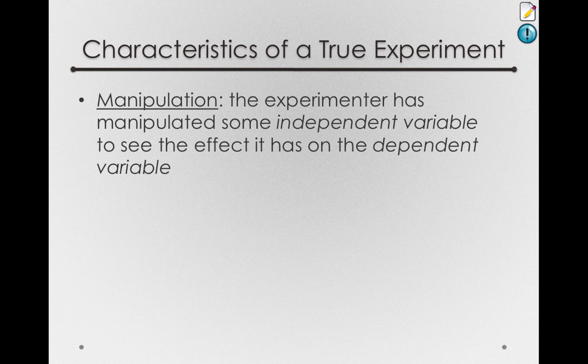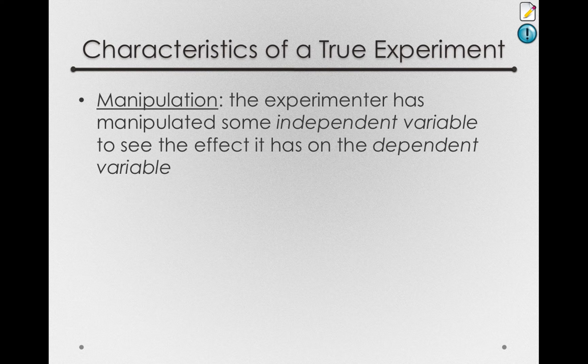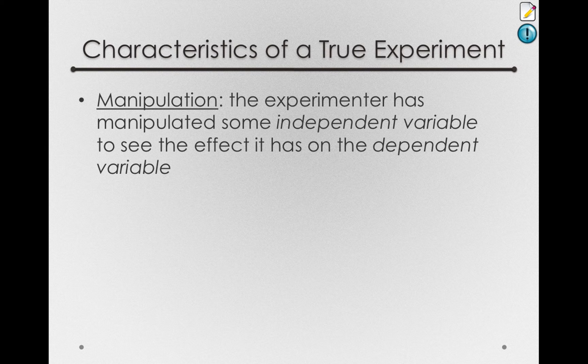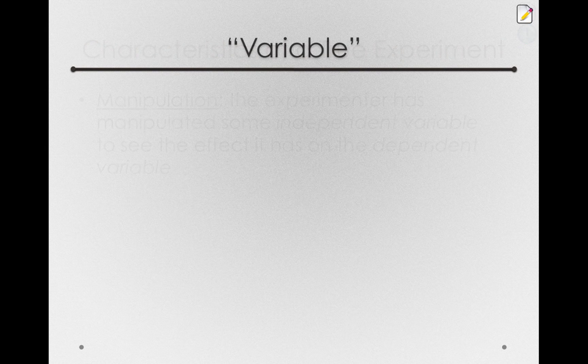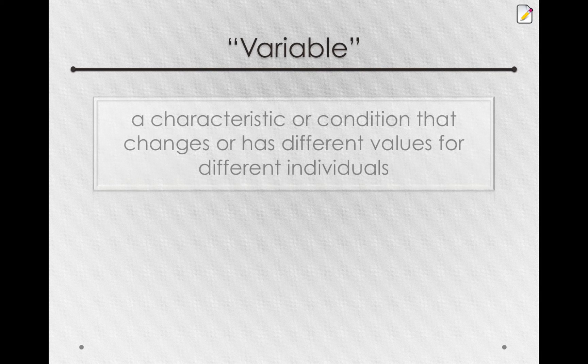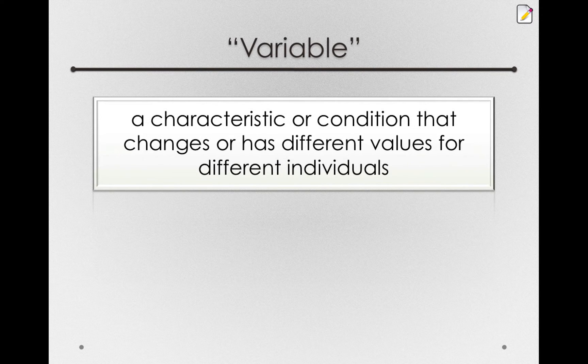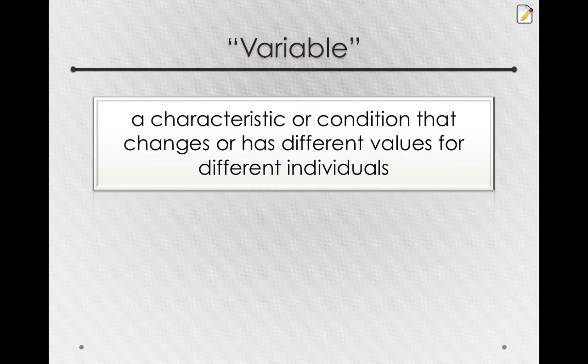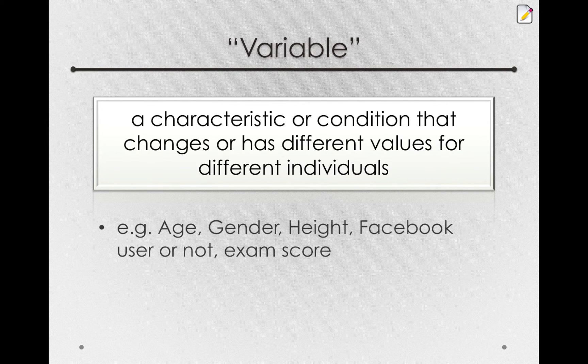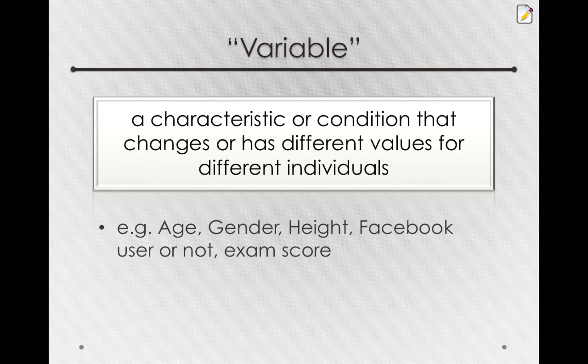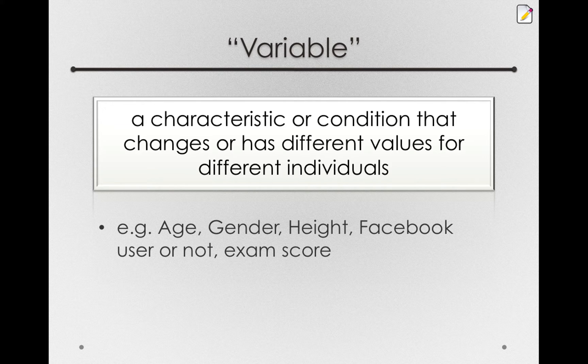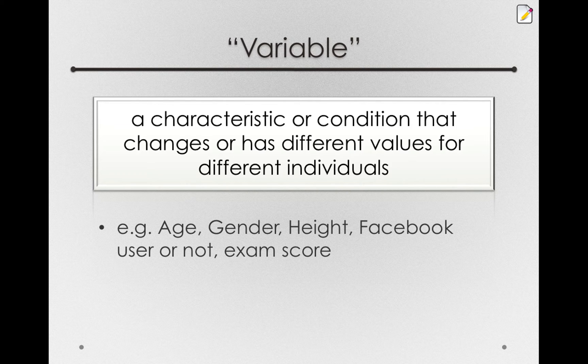There's a couple new words in there, so we want to take a sidestep here and talk about what we mean by variable, independent variable, and dependent variable. First, a variable is any characteristic or condition that changes or has different values for different individuals. This could be many different types of things - could be the age of a person, their gender, height, whether they're a Facebook user or not, someone's exam score. These are all variables because different people have different values on them.